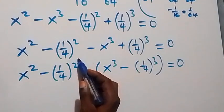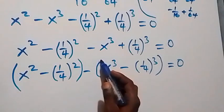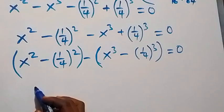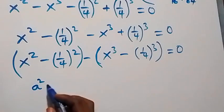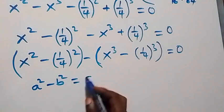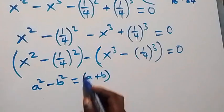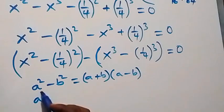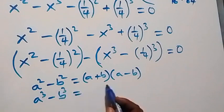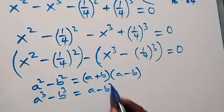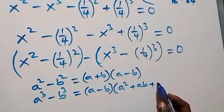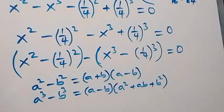Now we apply two identities. For the squared terms we use difference of two squares: a squared minus b squared equals (a plus b)(a minus b). For the cubed terms we use difference of two cubes: a cubed minus b cubed equals (a minus b)(a squared plus ab plus b squared).